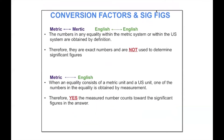In terms of significant figures and conversion factors: anytime you are converting two numbers within the metric system — metric to metric or English to English — those numbers are a definition, a defined conversion. Therefore, we do not have to worry about significant figures because those are exact numbers. For example, in one foot there are 12 inches, so the one and the 12 will never count towards significant figures because that equality is just defined — there's no measurement that took place there.